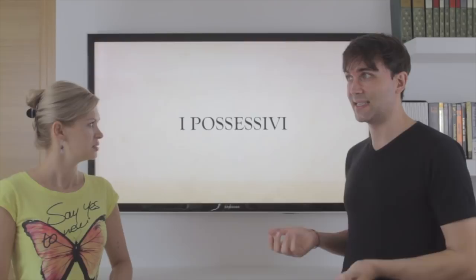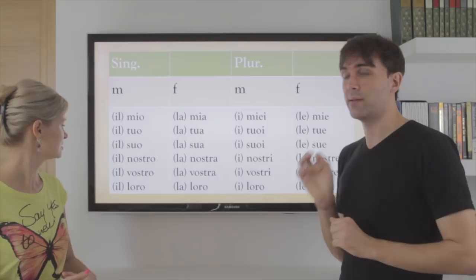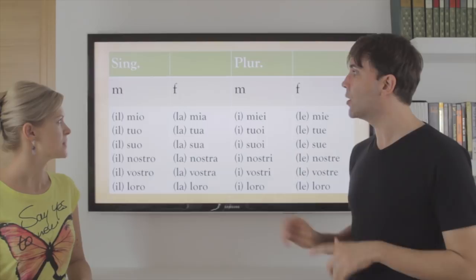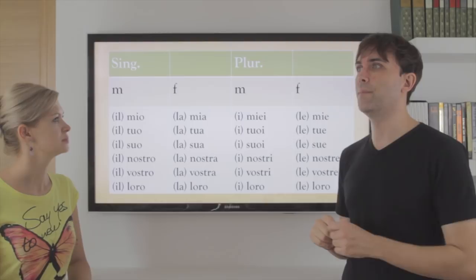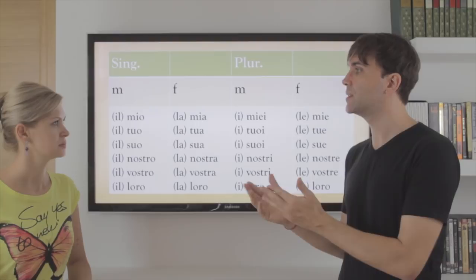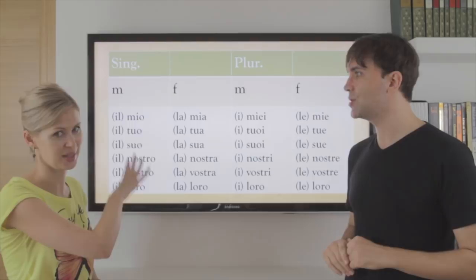Possessivi. One very important thing about possessives: possessives in Italian always go with the article, as you can see — I put the articles. So it's not like English. Also, we don't have a difference between 'your' and 'yours', or 'my' and 'mine' — it's always the same. Something is easier!